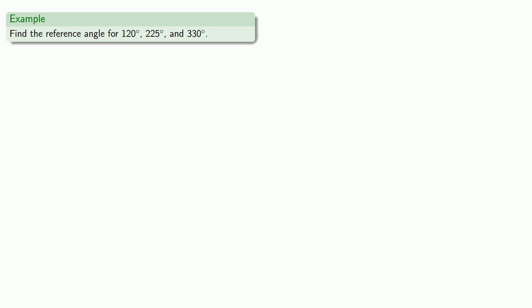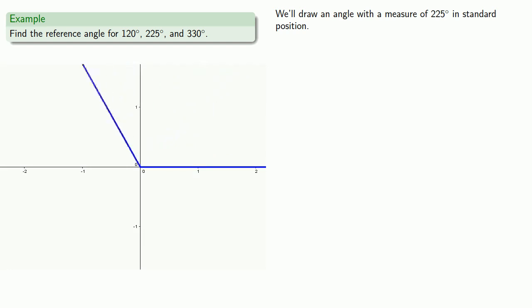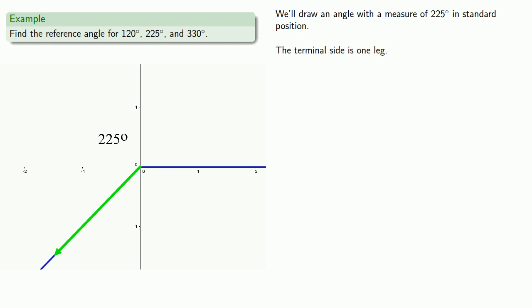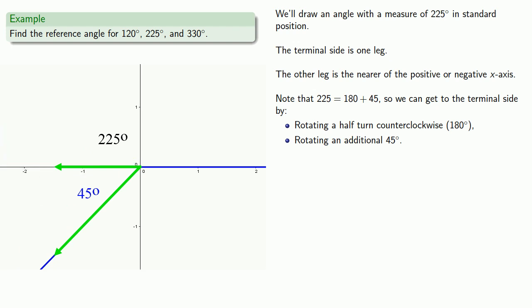For an angle of 225 degrees, we draw the angle in standard position. The terminal side is one leg, and the other leg is on the negative x-axis, which is nearer. Since 225 is 180 plus 45, we rotate a half turn counterclockwise (180 degrees) and then an additional 45 degrees, so the reference angle is 45 degrees.